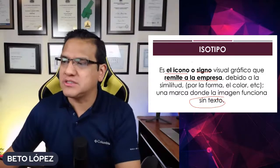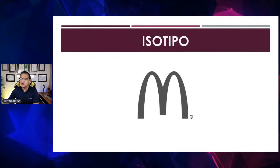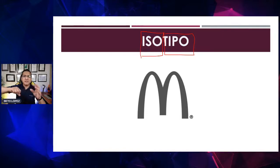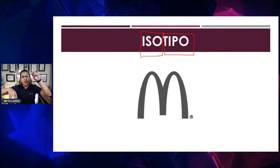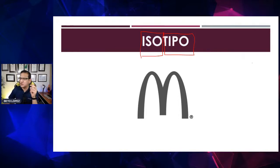¿Cómo funciona esto en los logotipos? La M de McDonald's es un isotipo, es un ícono. El prefijo 'iso' viene de imagen, y 'tipo' de la impresión. Se imprimía el ícono, por eso se llama isotipo. Logo viene de palabra, logotipo son letras. Isotipo es ícono. Para los observadores: el ISO de las cámaras es la imagen, por eso se le llama ISO 800, ISO 2000, porque es la imagen.